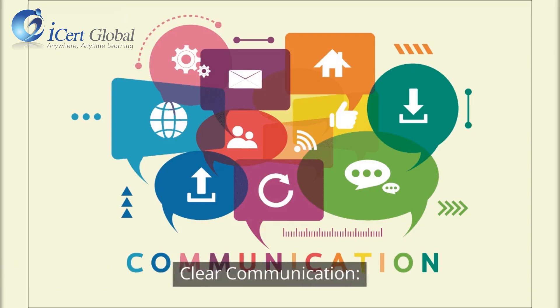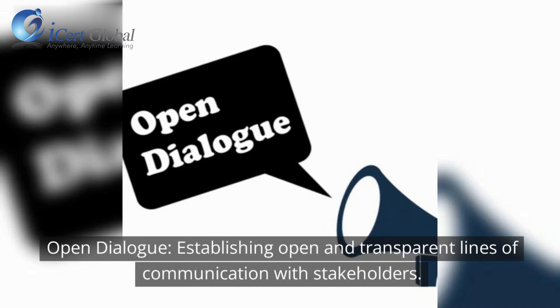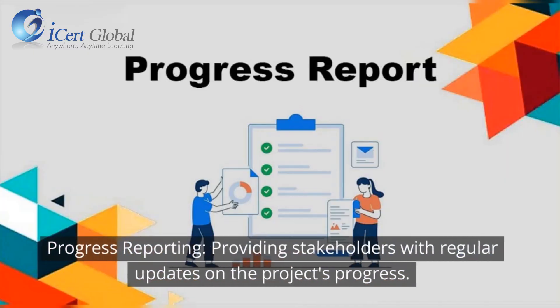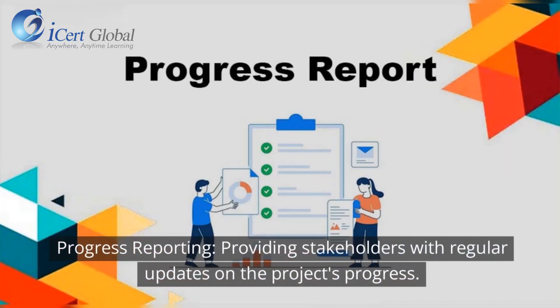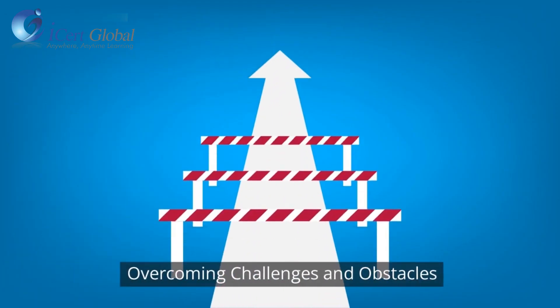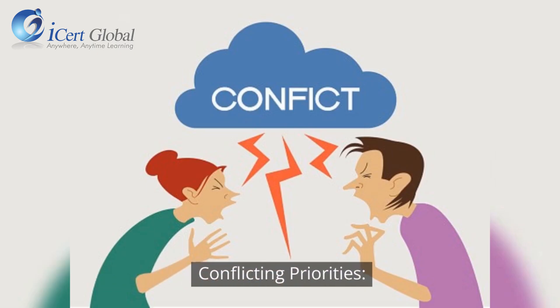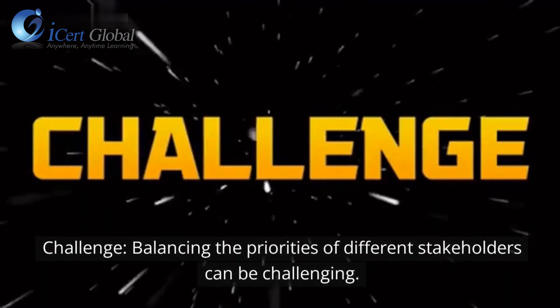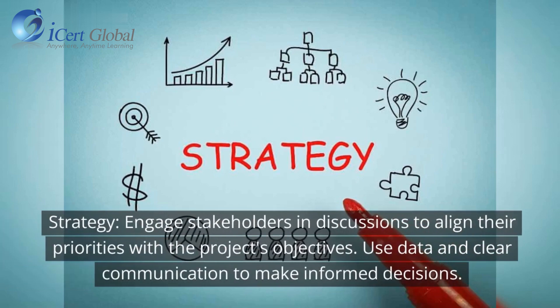Clear Communication: Open Dialogue — establishing open and transparent lines of communication with stakeholders. Regular Updates — providing stakeholders with regular updates on the project's progress. Overcoming Challenges: Conflicting Priorities — balancing the priorities of different stakeholders can be challenging. Strategy: engage stakeholders in discussions to align their priorities with the project's objectives; use data and clear communication to make informed decisions.